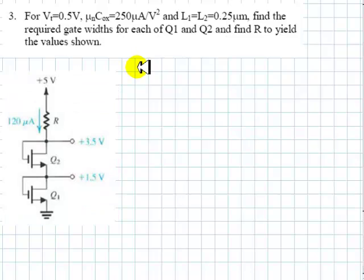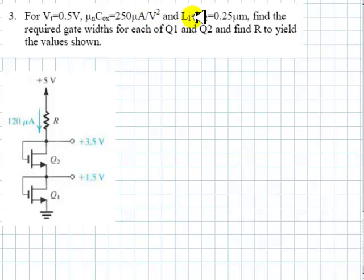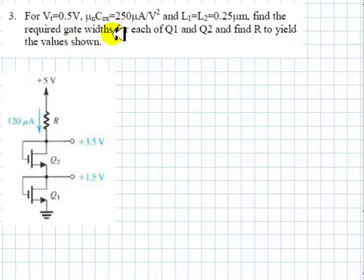Let's go now for question number 3. For Vt, the threshold voltage, half a volt. μnCox is 250 microamps per volt squared, and the form factor is given only in part. The length of the channel is the same for both transistors — they are absolutely the same — is one quarter of a micrometer. Find the required gate widths for each of the two transistors, Q1 and Q2.